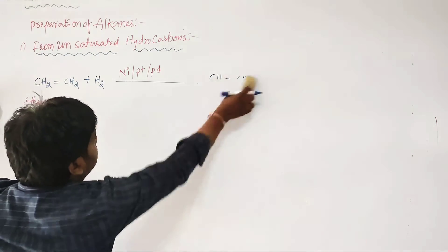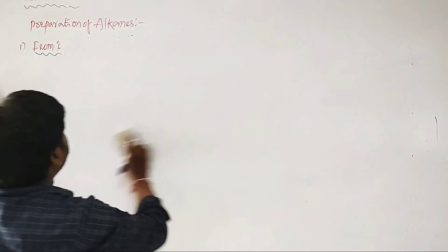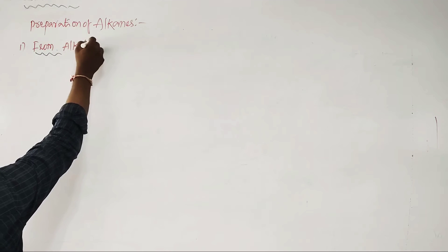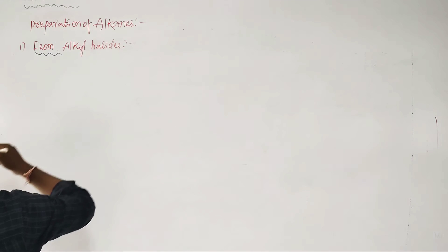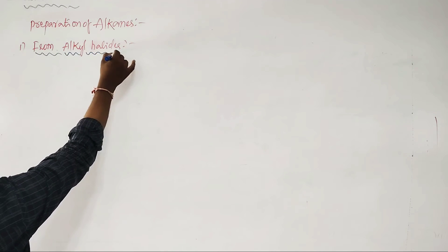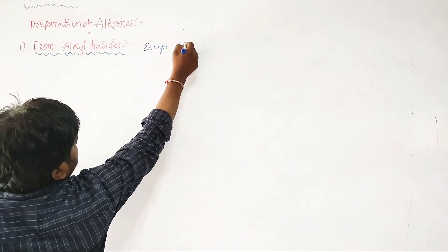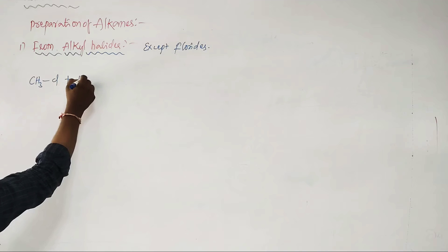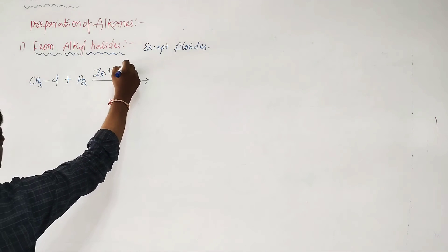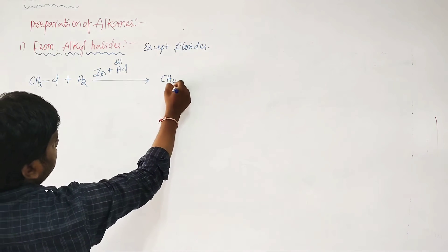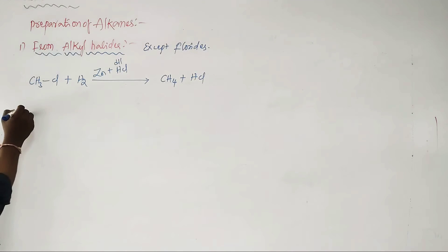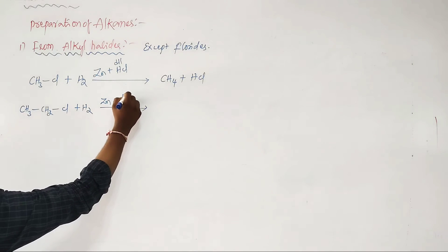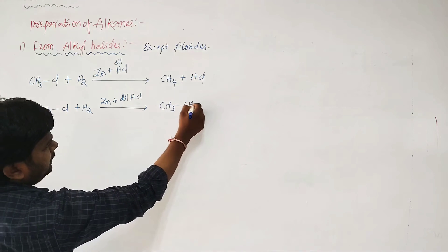The second method is preparation of alkanes from alkyl halides. For example, CH3Cl (chloromethane) plus H2 in the presence of zinc and dilute HCl gives CH4 plus HCl. Similarly, CH3CH2Cl (ethyl chloride or chloroethane) plus H2 with zinc and dilute HCl gives CH3–CH3 plus HCl.